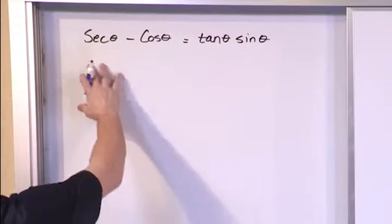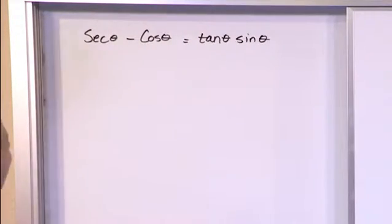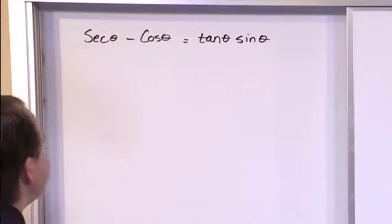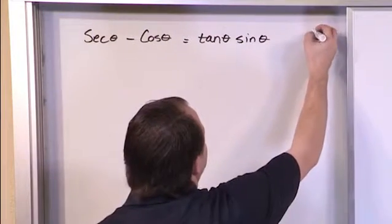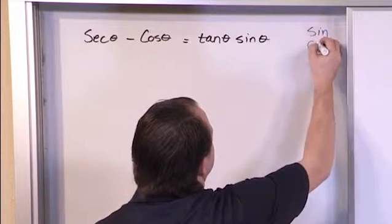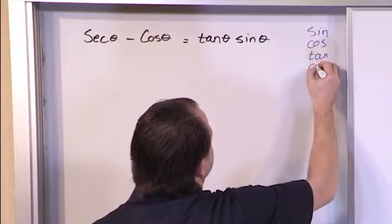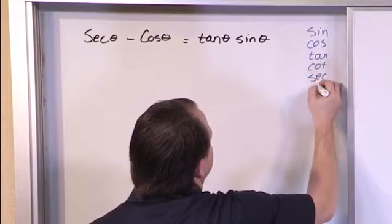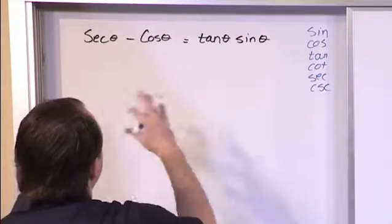So we look at it and we say right away we don't have any squares anywhere so we can't really apply a trig identity. So the first thing I almost always do is write my trig rainbow: sine, cosine, tangent, cotangent, secant, cosecant. Because then I can see what can I do.